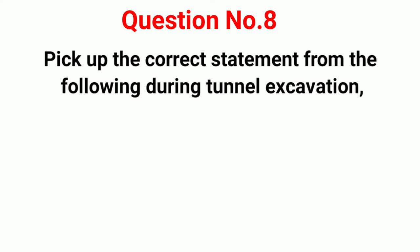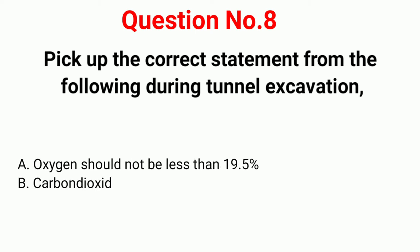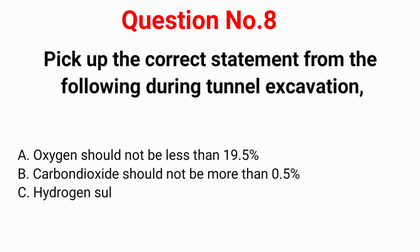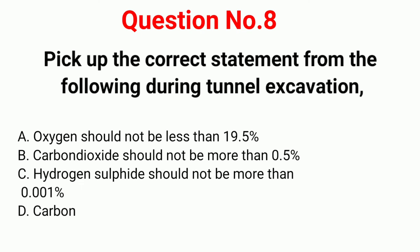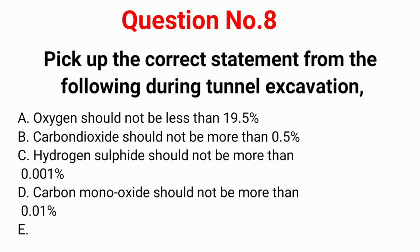Question number 8. Pick up the correct statement from the following during tunnel excavation. Option A: Oxygen should not be less than 19.5%. Option B: Carbon dioxide should not be more than 0.5%. Option C: Hydrogen sulfide should not be more than 0.001%. Option D: Carbon monoxide should not be more than 0.001%. Option E: All of the above.